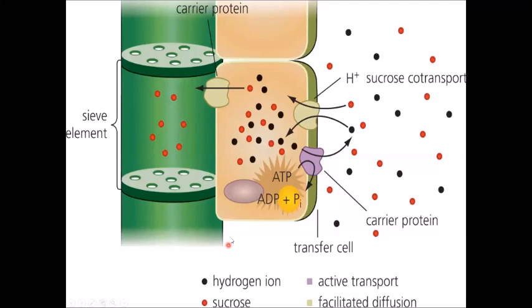The first stage is energy is used to pump the hydrogen ions out of the companion cell. We are now lacking hydrogen ions in the companion cell, there's a lot of them outside, so we've set up a really good concentration gradient.